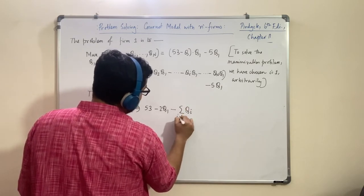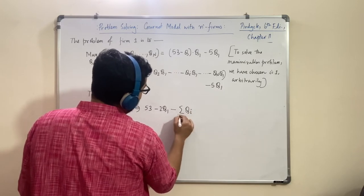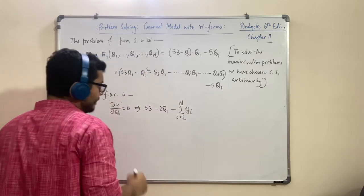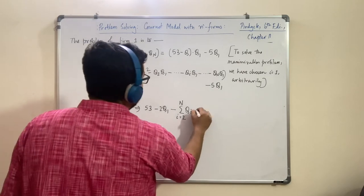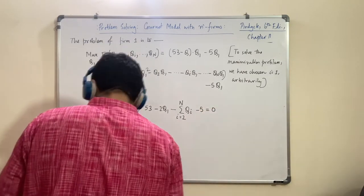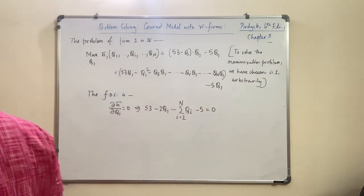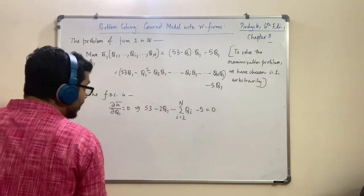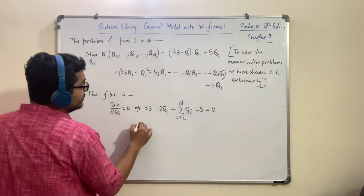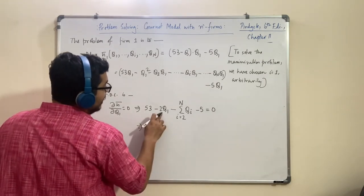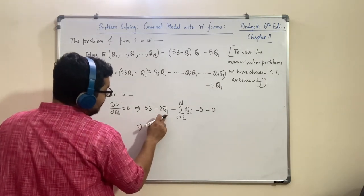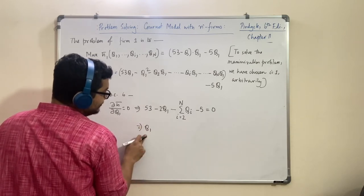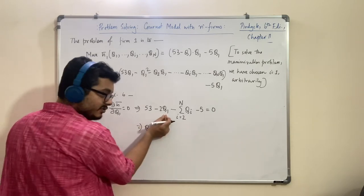Hence, limit as N tends to infinity of P star = 5, which equals MC. So as N becomes infinitely large, the Cournot market price reaches the competitive level. That's how you do it while solving the problem. Remember what we wrote — you can take i = 1, there is no issue. If you take 1, write that it is very important. Otherwise you can just follow the approach taken in the derivation.